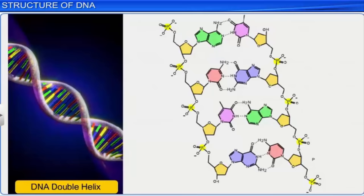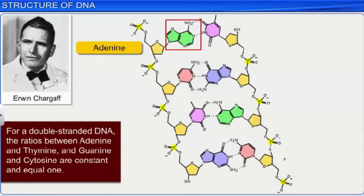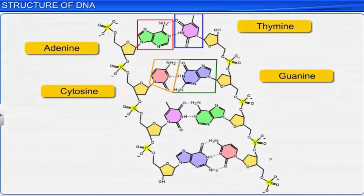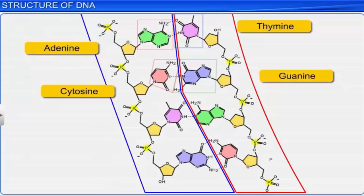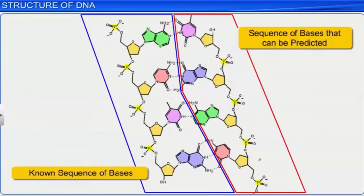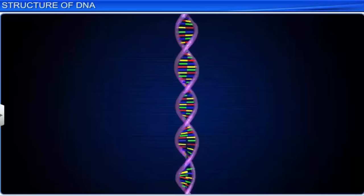This proposition was based on the observations made by Irwin Chargaff, who found that the ratios between adenine and thymine, and guanine and cytosine, are constant and equal to 1 for a double-stranded DNA. Due to base pairing, the polynucleotide chains possess a very unique property — the strands are complementary to each other. Therefore, if we know the sequence of bases on one strand, it is possible to predict the sequence in the other.